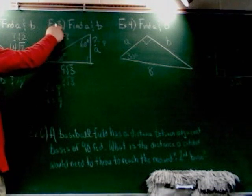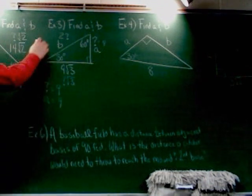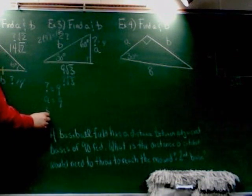This side, B, says 2 times question mark. Well, we just said question mark is 9, so that's 2 times 9, or 18. So B is 18.